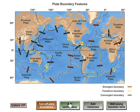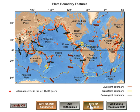Volcanoes are also related to plate boundaries. Most of the Earth's active volcanoes occur along the edges of plates, particularly in places of subduction — convergent boundaries where an ocean plate plunges underneath another plate. For example, here the Nazca plate is plunging under the South American plate, making the Andes, which are full of active volcanoes.